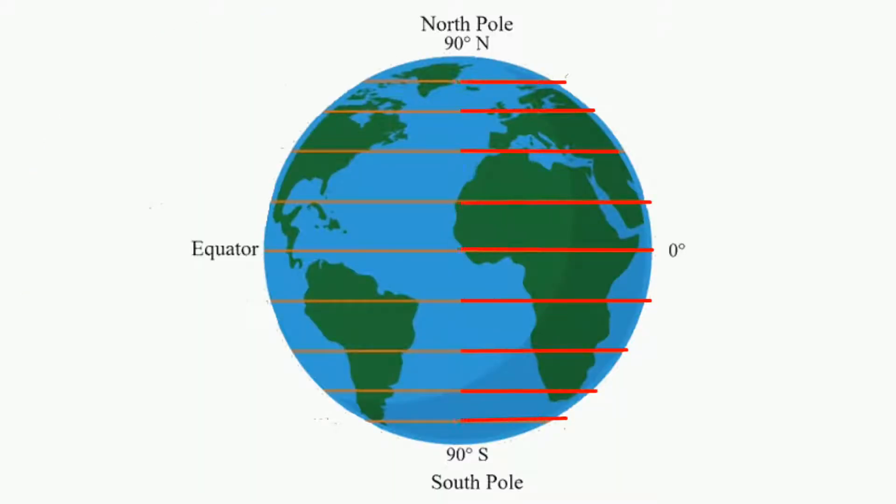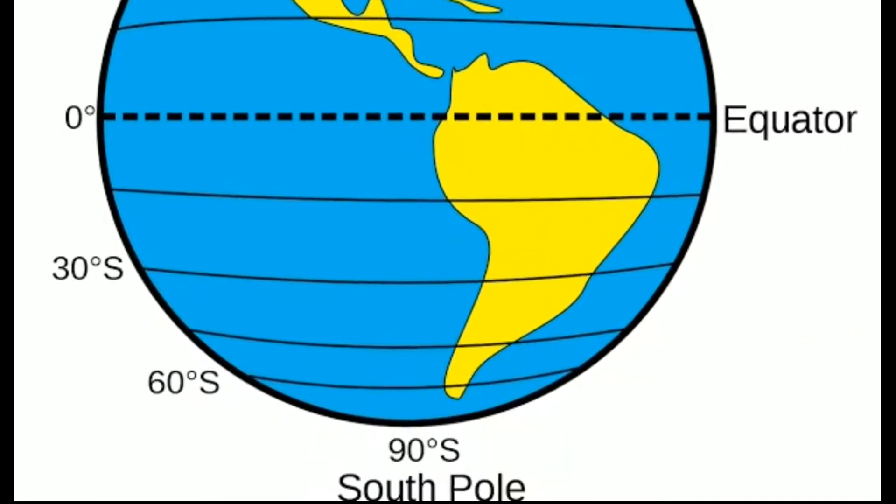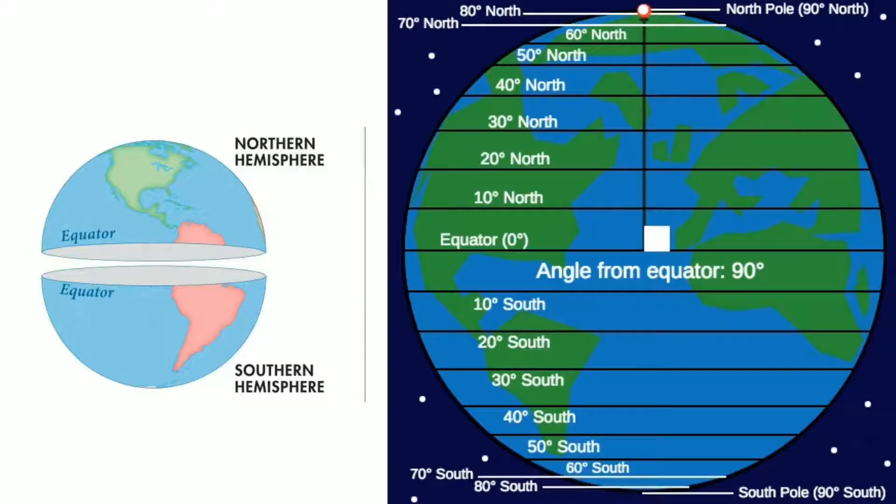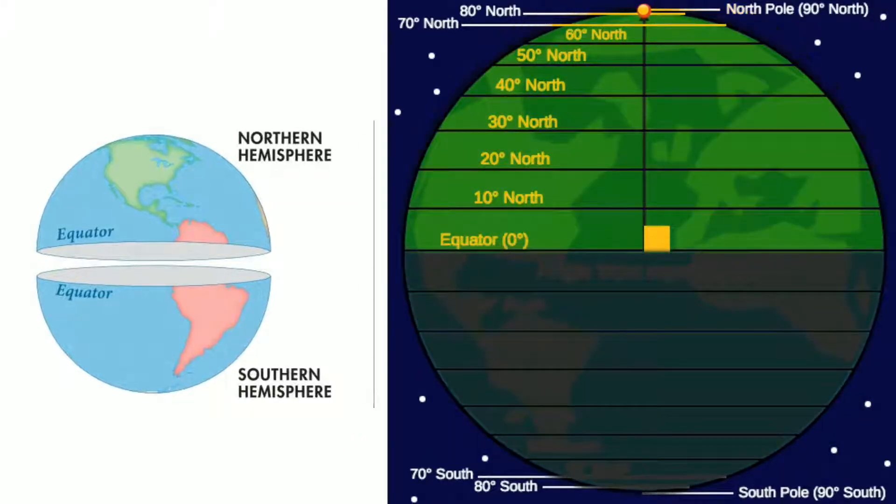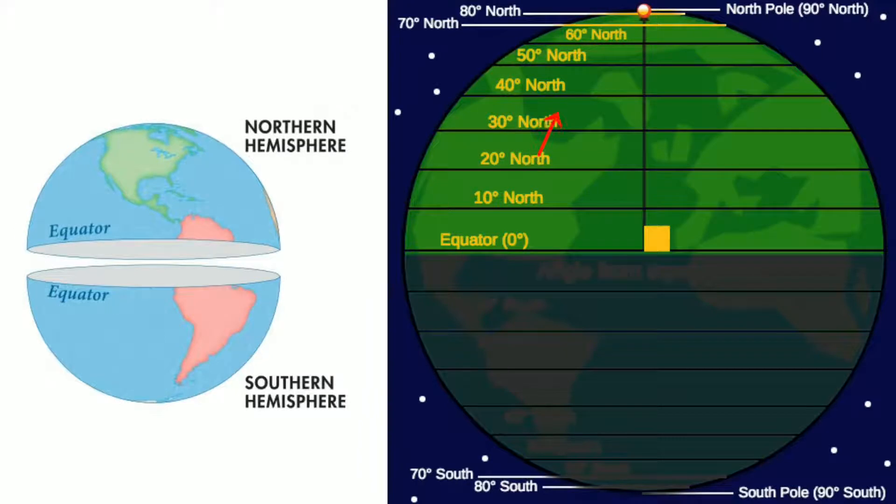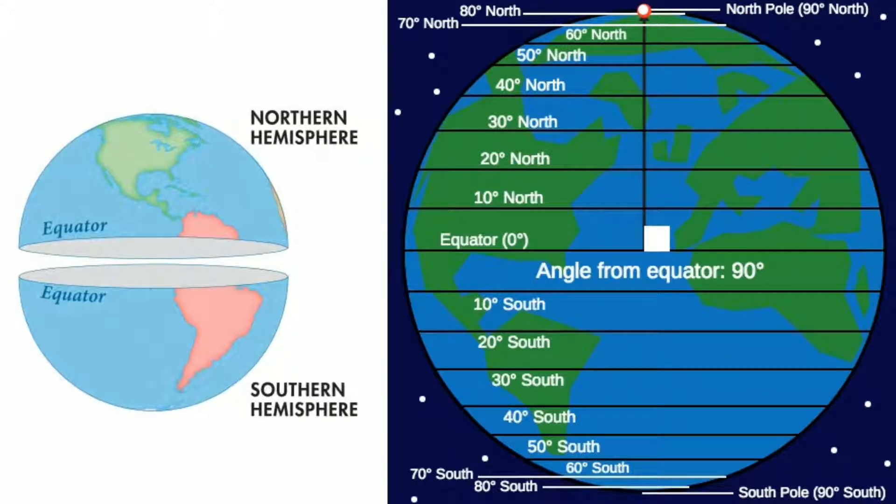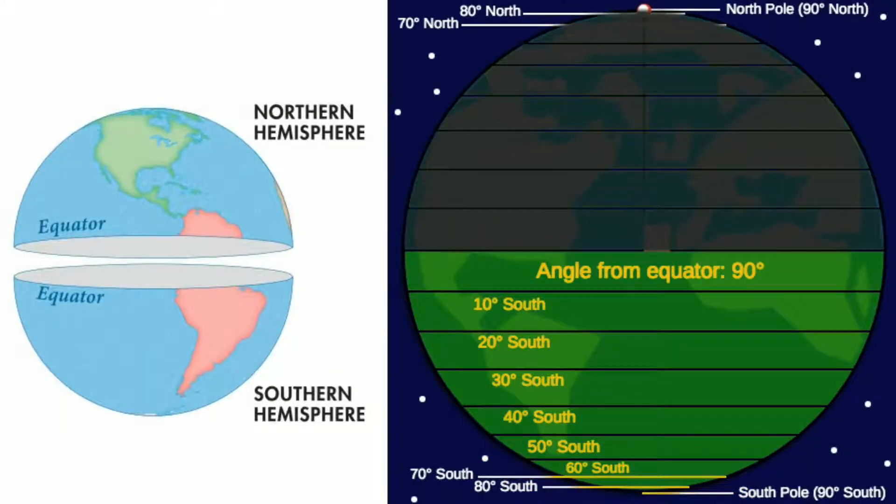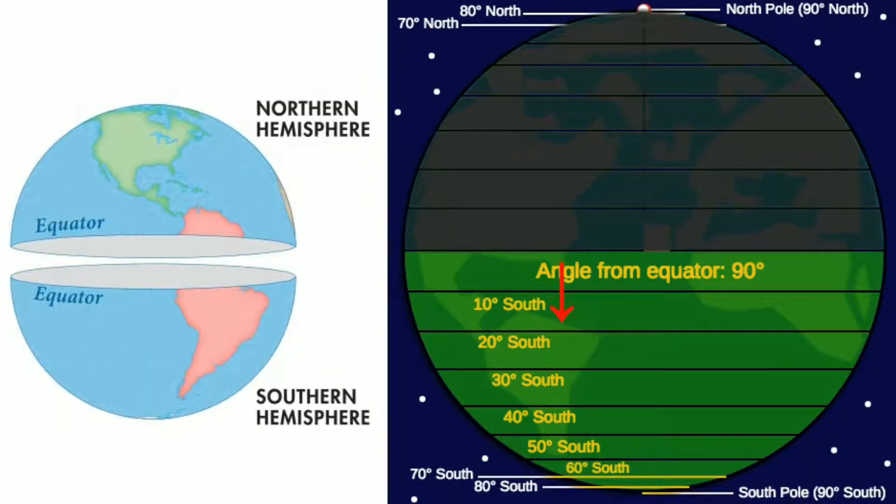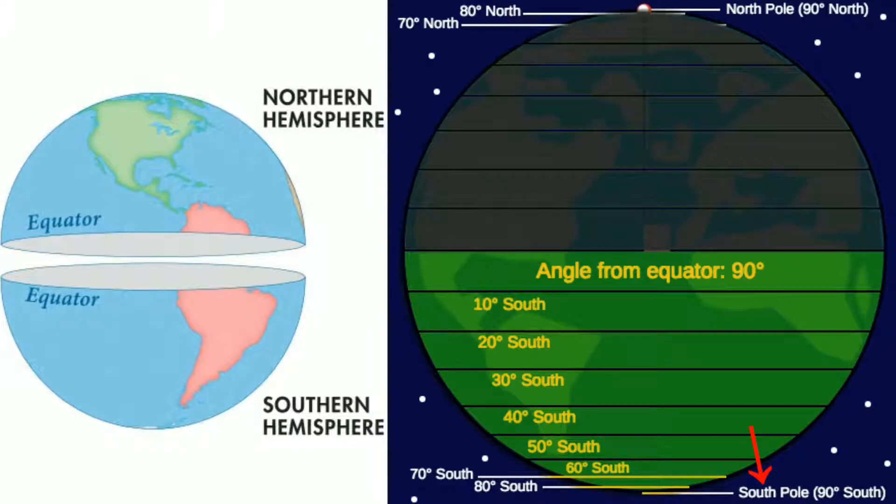The length of the latitudes decreases as one moves towards the poles. These lines never intersect or meet each other. The lines of latitude start at the equator which is marked as 0 degrees. The north pole is 90 degrees north and the south pole is 90 degrees south. The parallels in the northern hemisphere are marked as 10 degrees north, 20 degrees north and so on up to 90 degrees north. The parallels in the southern hemisphere are marked as 10 degrees south and so on up to 90 degrees south.